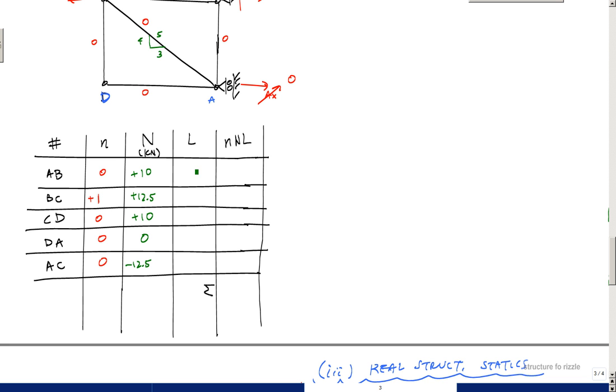The lengths are already given, so this is 2 meters, 1.5 meters, 2 meters for CD, and then 1.5 meters, and then using some basic trig this is just 2.5 meters.